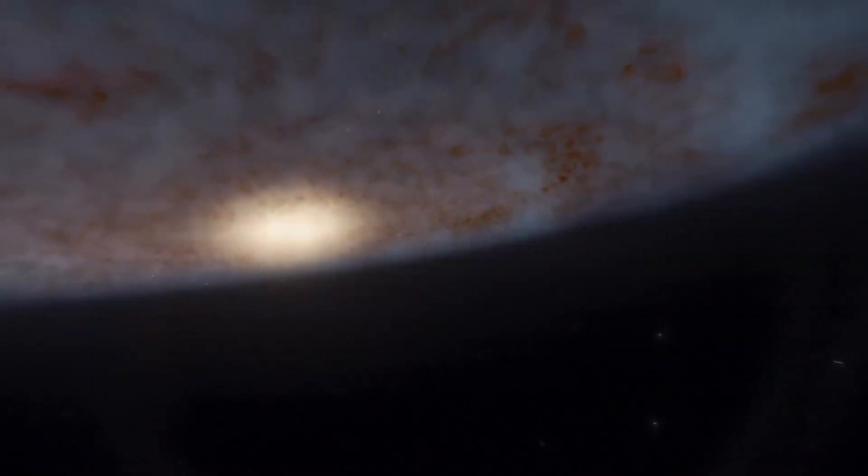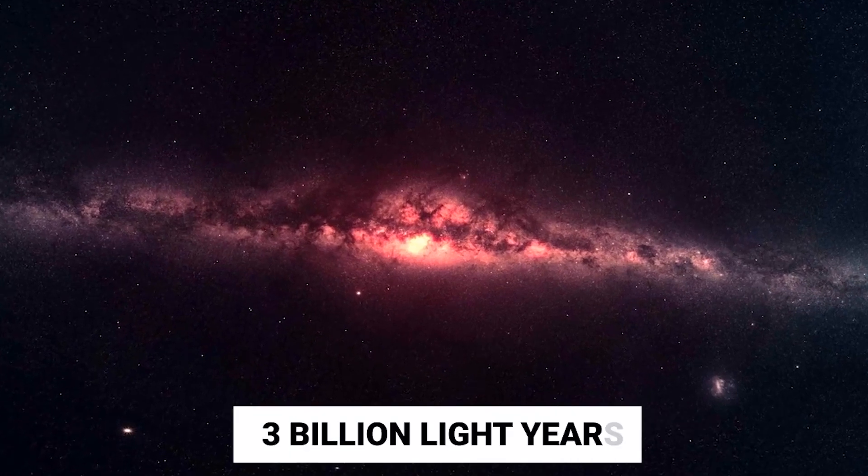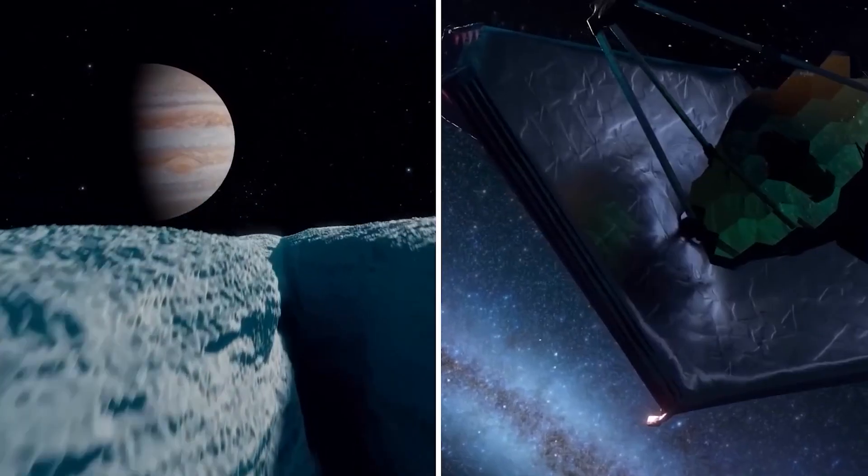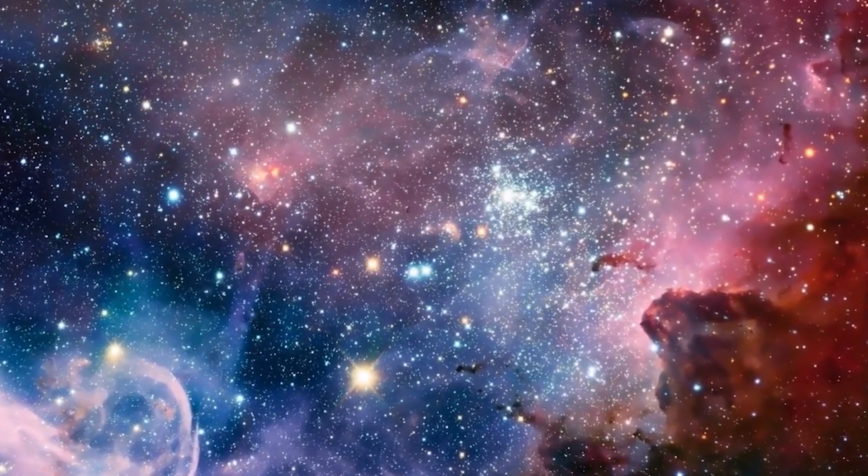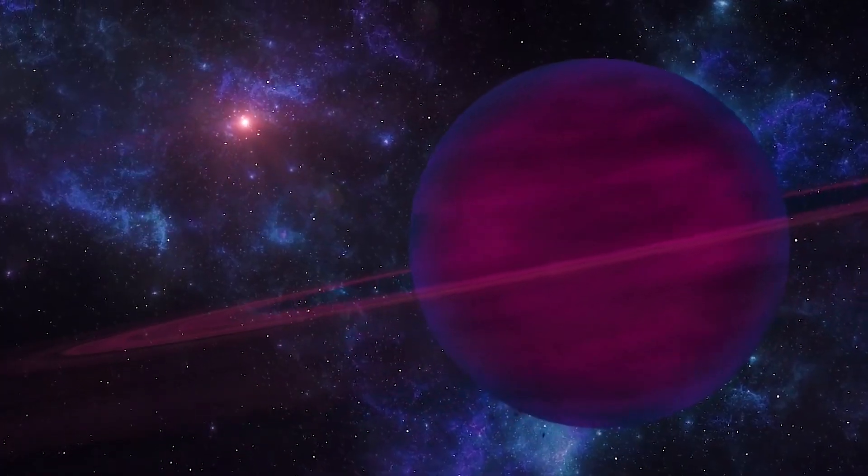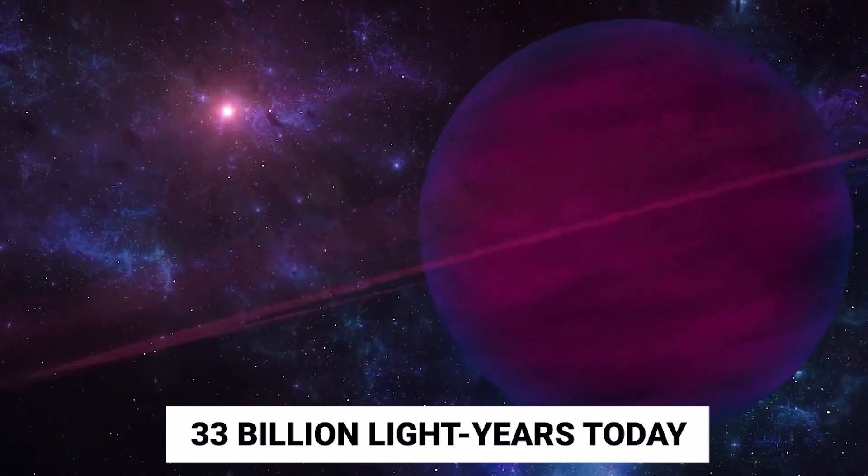He added, When GLASS Z13 emitted the light we see today, it was about 3 billion light years away from us, or whatever us was back then. The 3 billion light years of space that once separated us from GLASS Z13 has expanded to over 33 billion light years today.